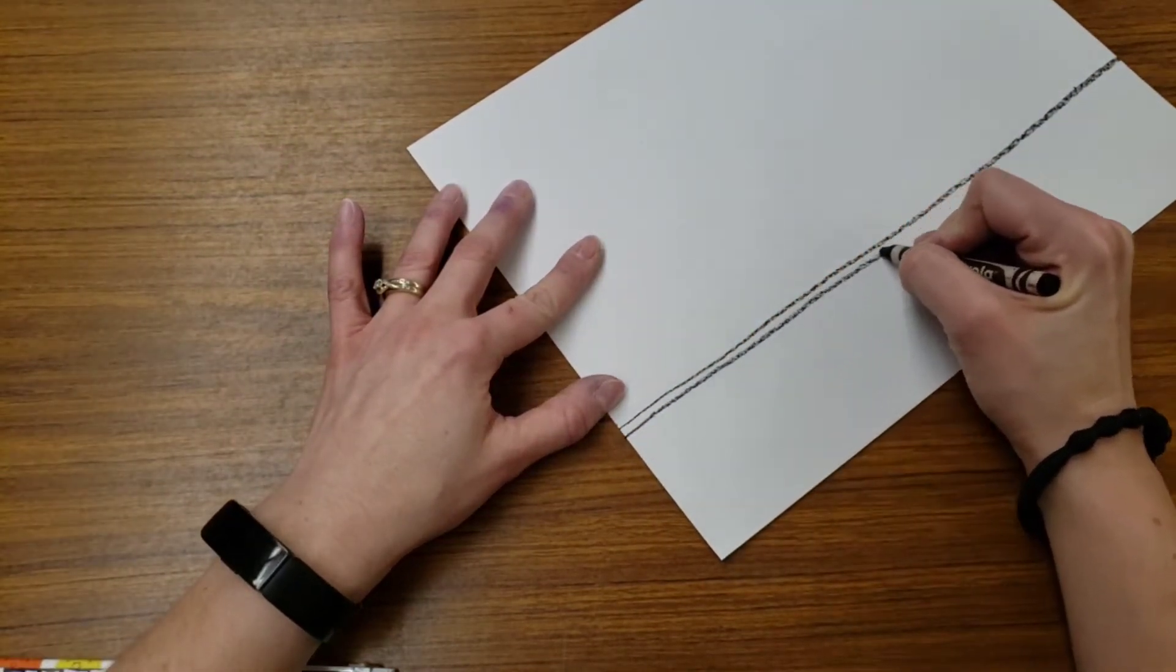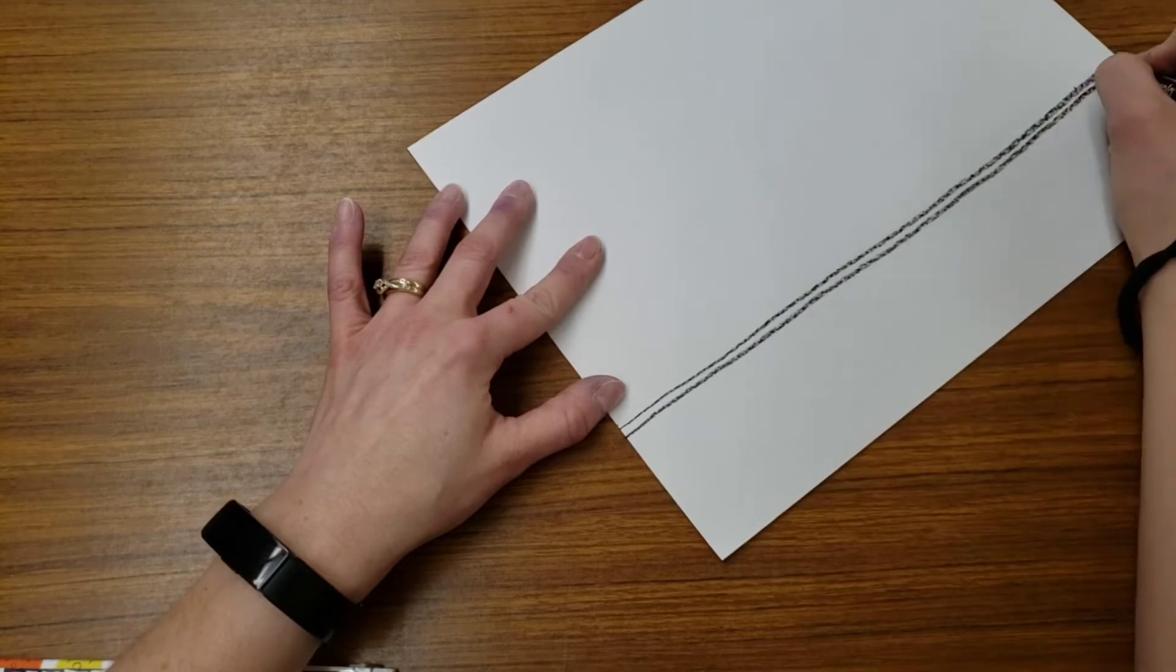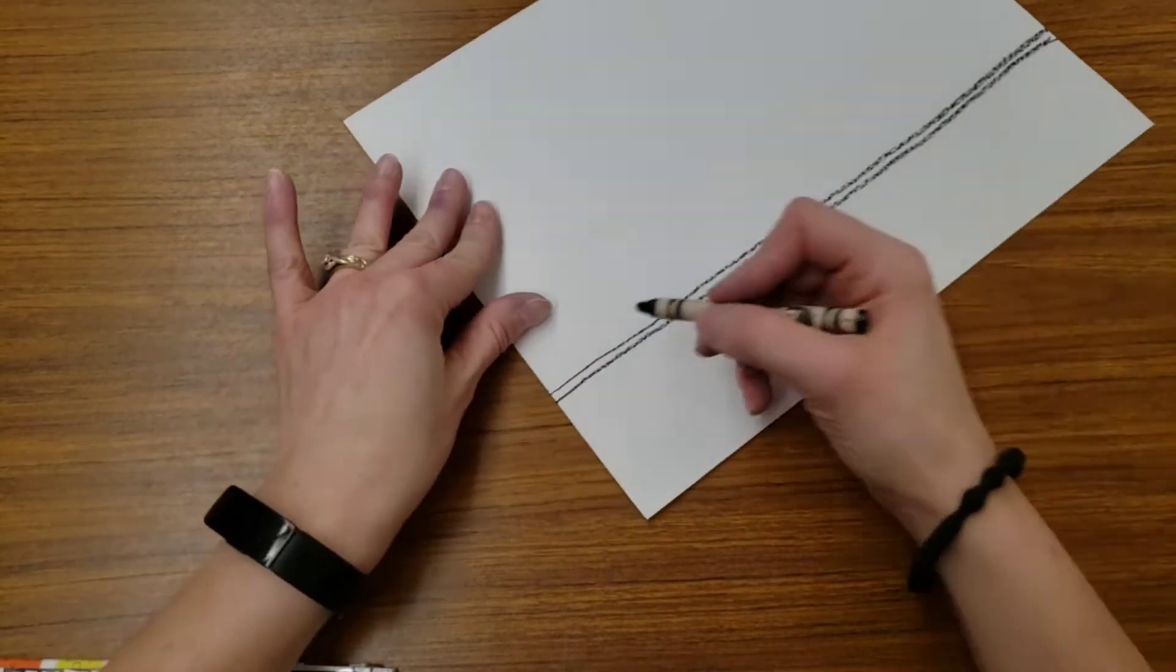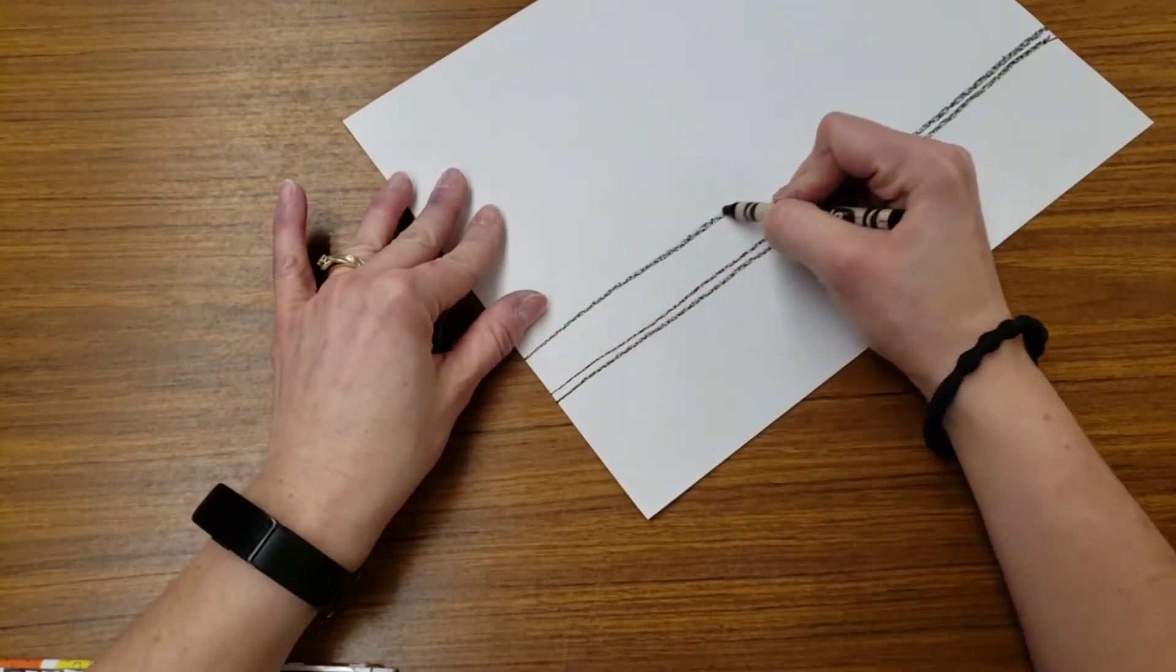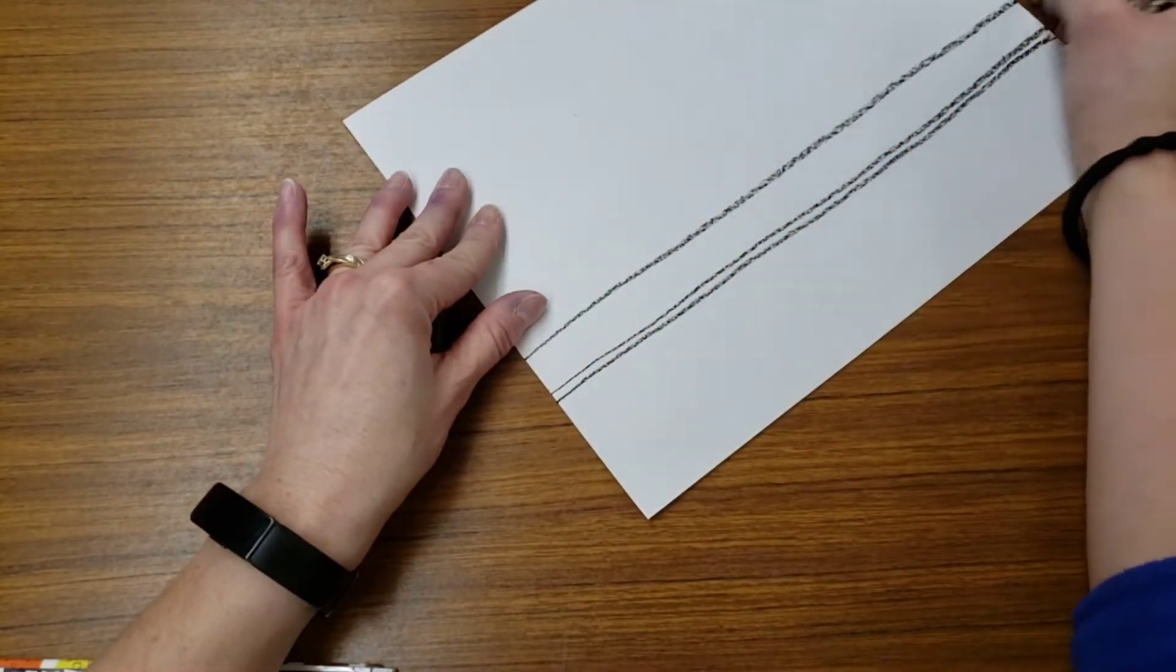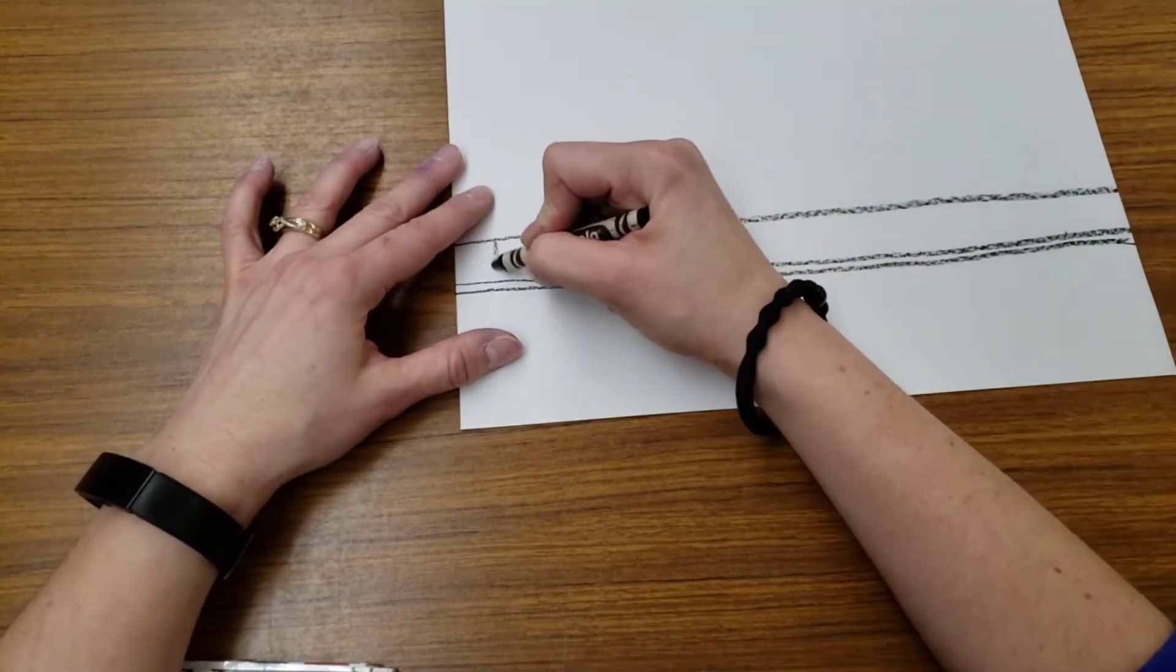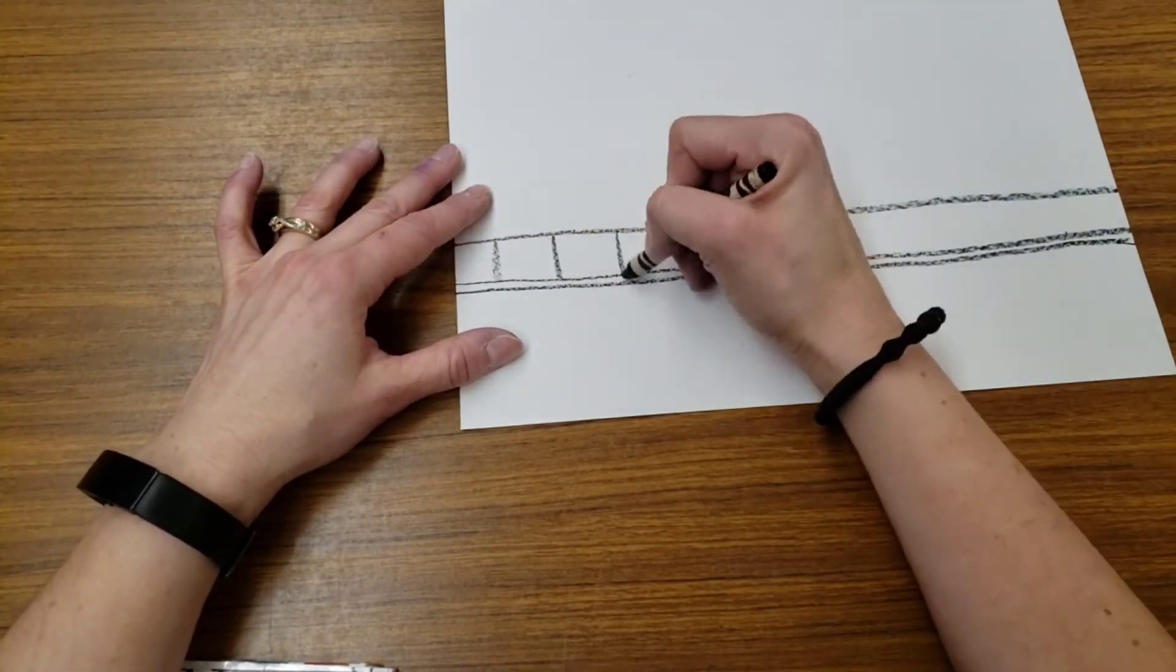And another line—this is the actual sidewalk itself. I'm going to put in some vertical lines so you can see the cracks in the sidewalk. All right, sidewalk drawn.